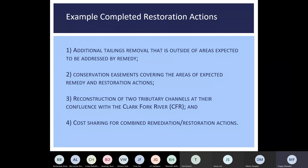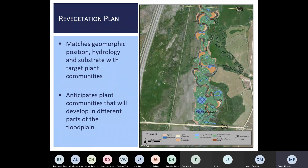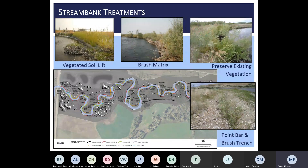Here are some examples of restoration actions completed in the upper Clark Fork River since 2012: additional tailings removal outside remedy, conservation easements to provide long-term protection of restored floodplains, tributary restoration, and cost sharing to directly support combined remedy and restoration. In previously completed phases, these are some of the combined remedy and restoration actions completed. These include treatments to enhance the floodplain, revegetation plans that integrate with grading plans developed by engineers to ensure elevations and hydrology support desired plant communities, and a variety of stream bank treatments laid out according to position along the river and related hydraulic stresses.